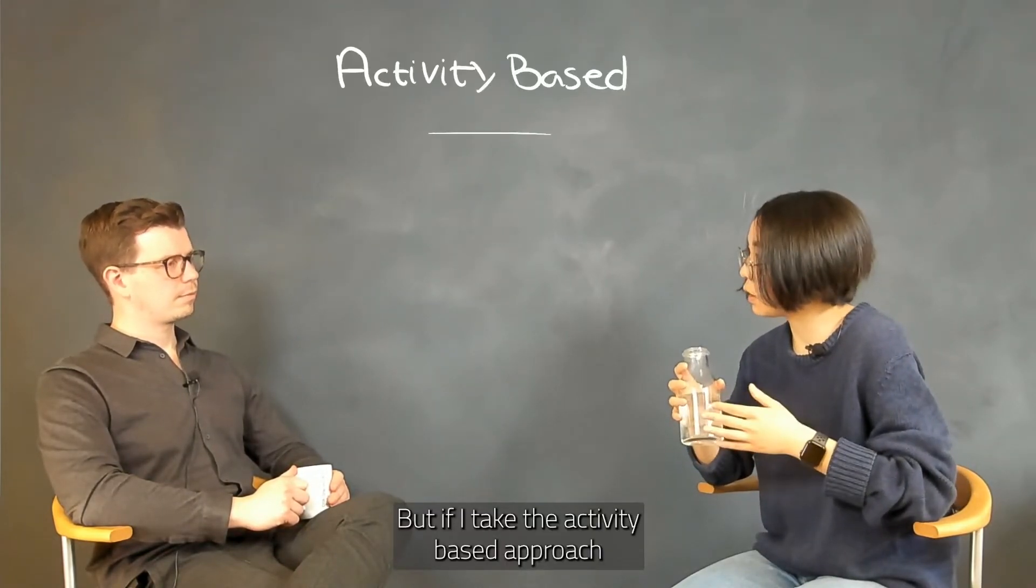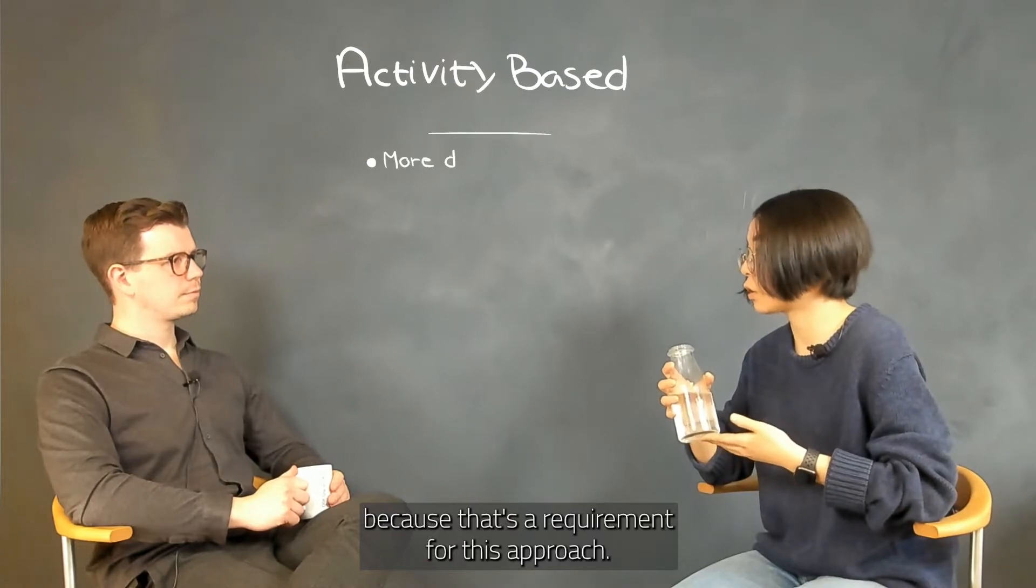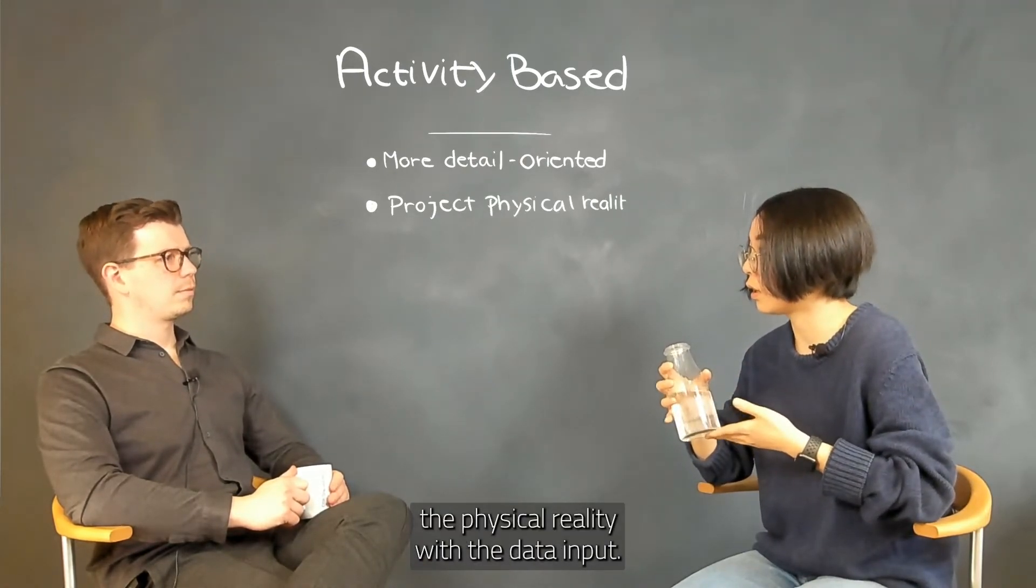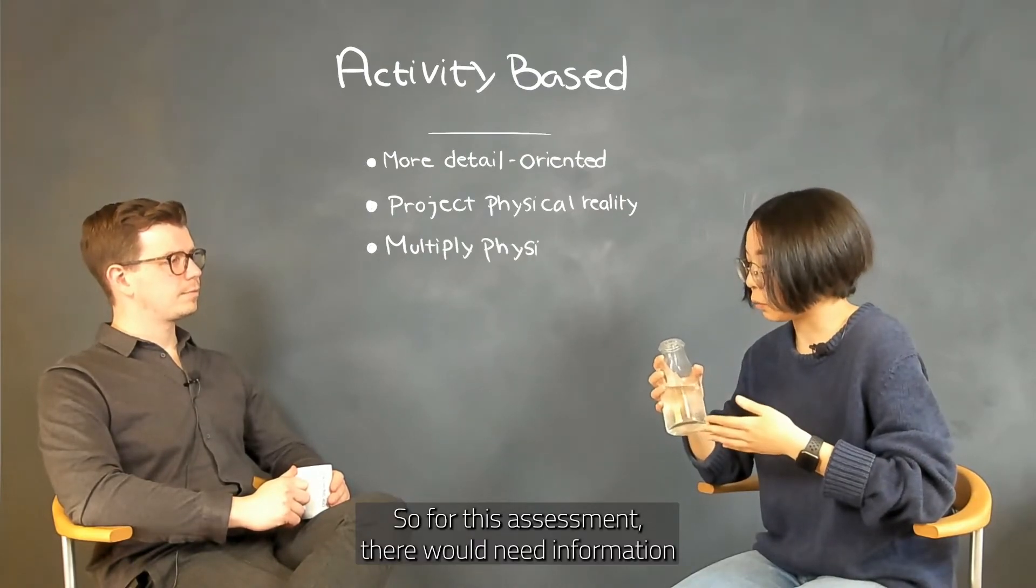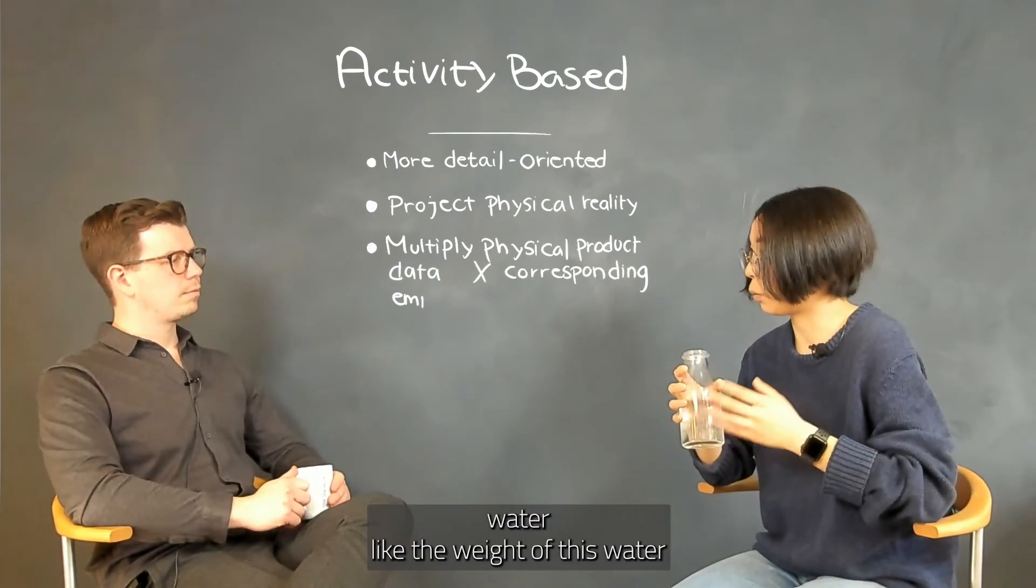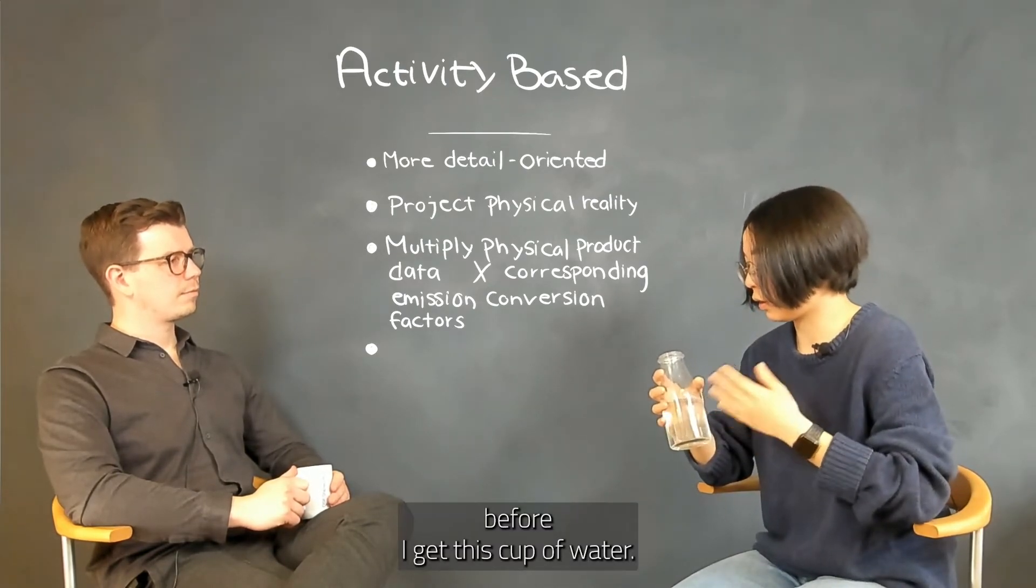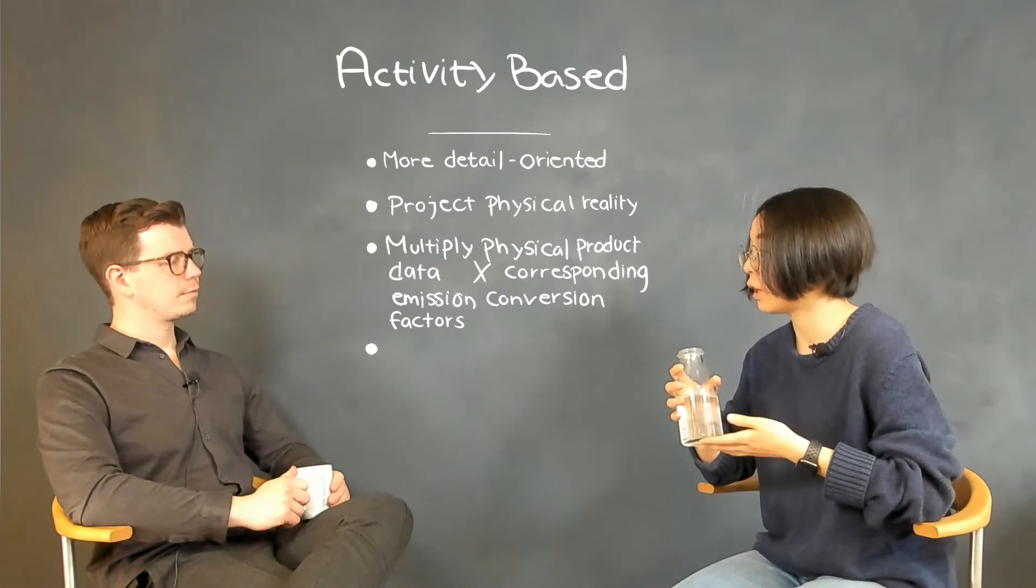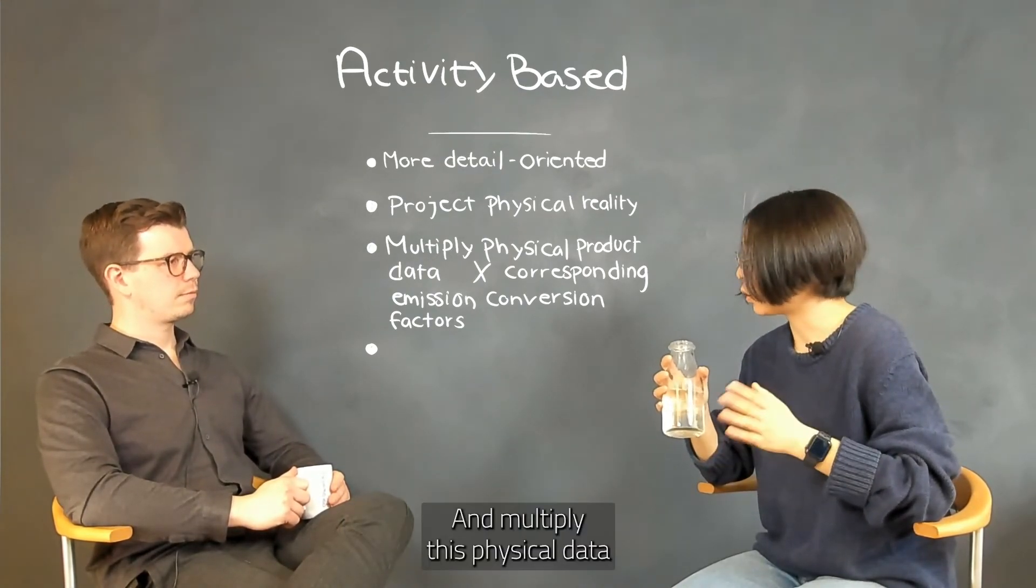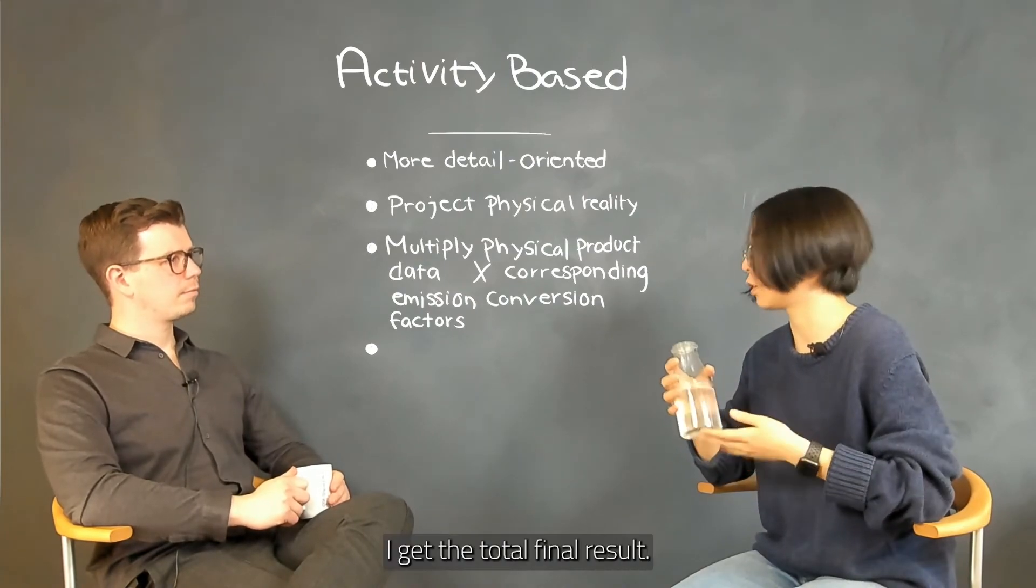But if I take the activity-based approach, then I need to look at the details, because that's a requirement for this approach. I said, try to give a physical reality, try to project the physical reality with the data input. So, for this assessment, I would need information such as how much is this water, like the weight of this water, and the temperature, if there's any pre-processing treatment before I get this cup of water, if it's hot, if it's chilled, and so on. So, then I need to look up in the databases, the corresponding emission conversion factors, and multiply these physical data inputs with the corresponding conversion factors, sum them up, I get the total final result.